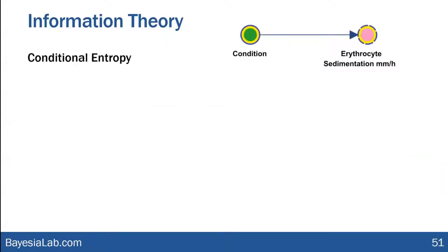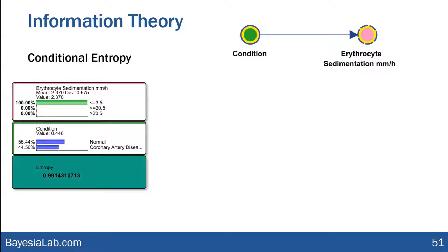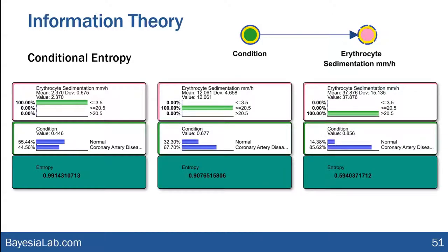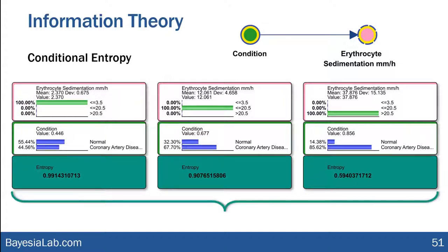Now we're no longer looking at marginal entropy, but conditional entropy. We put condition in relation to one of its predictors — again, erythrocyte sedimentation. We set observations on each possible state of ESR, calculate the corresponding entropy of condition, do that for all three possible states of ESR, get three entropies, and then take the weighted average. That gives us the conditional entropy of erythrocyte sedimentation.